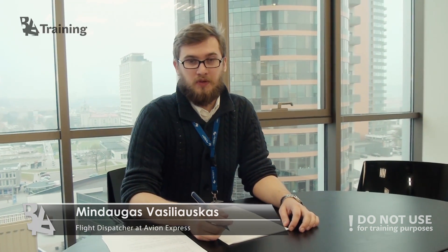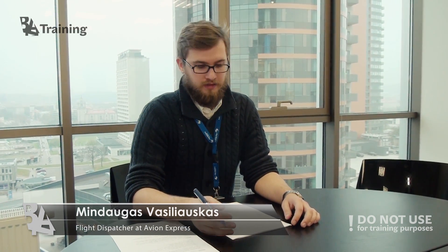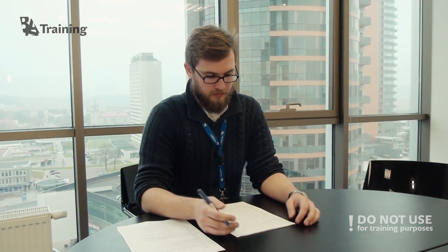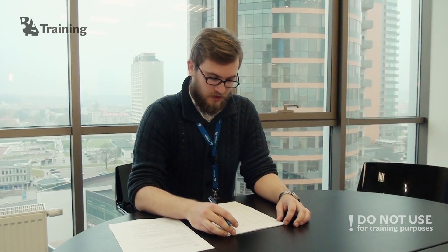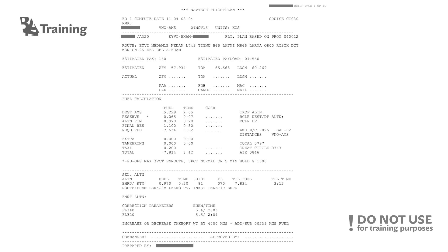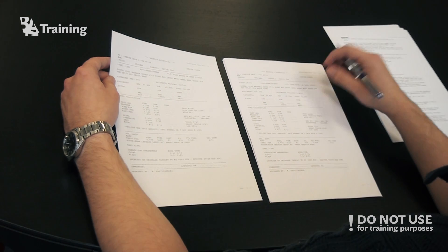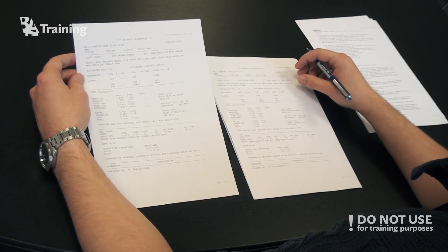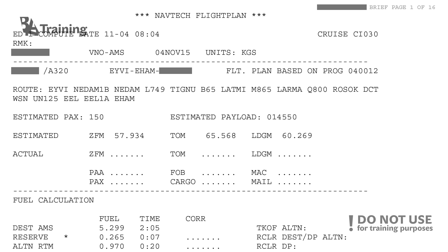Once we have all the information from NOTAMs and TAF reports, we can start planning. I'll now show you the basic flight plan for this flight from Vilnius to Amsterdam and explain the components of the flight plan. This is the first page, which is the most important one, and we have two copies — one left at the aircraft and the other given to ground handling. From this we see the basic information: the flight number and the route from Vilnius to Amsterdam, along with the route points we are going to use.